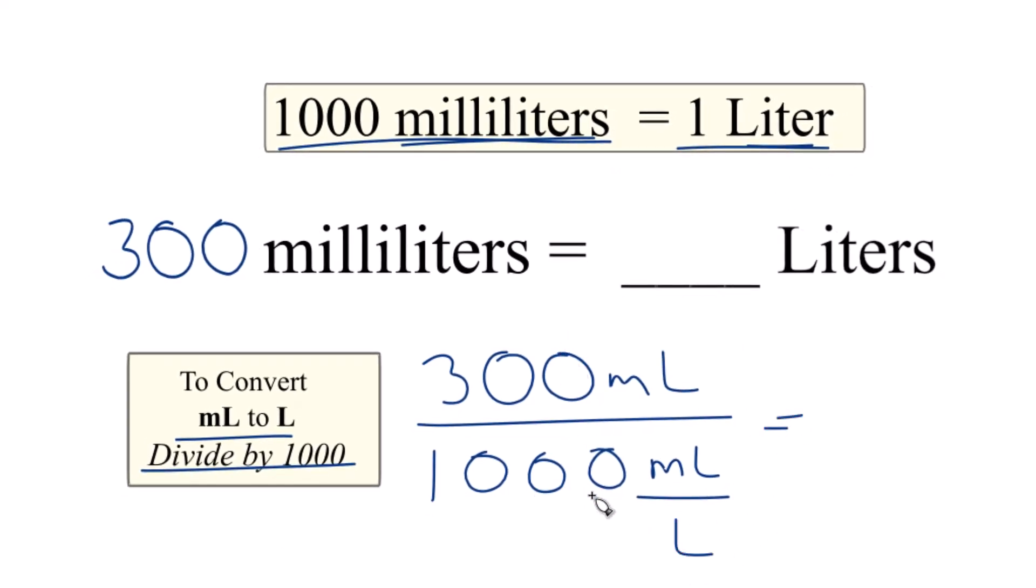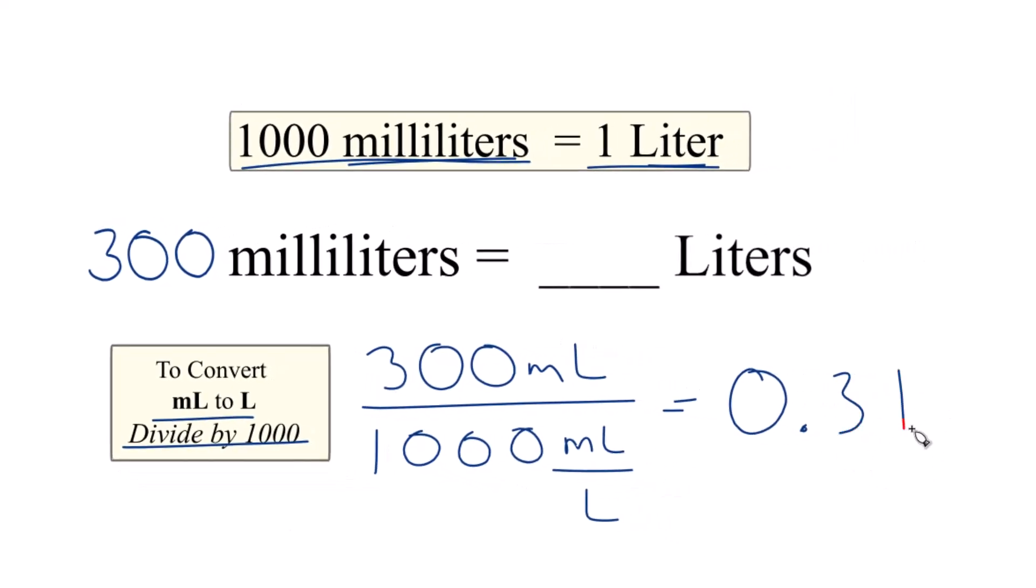Now we divide 300 by 1,000, we get 0.3, and it's going to be liters. That's because we have milliliters on the top and the bottom, they cancel out. We're left with liters.